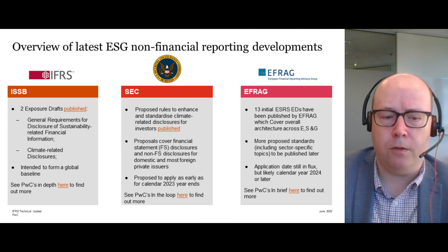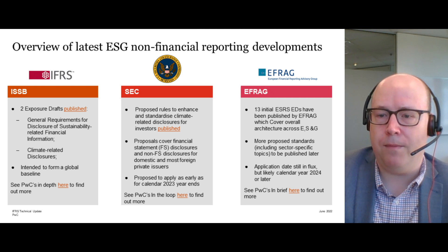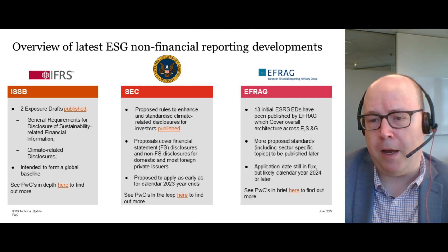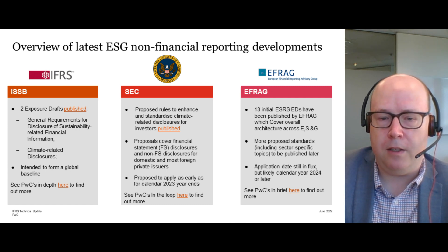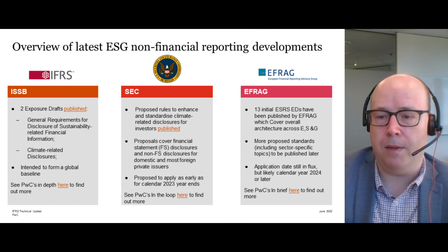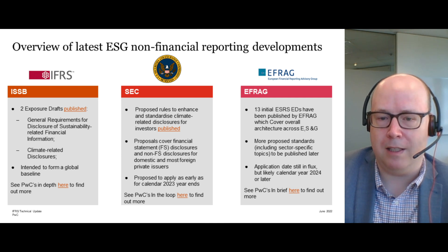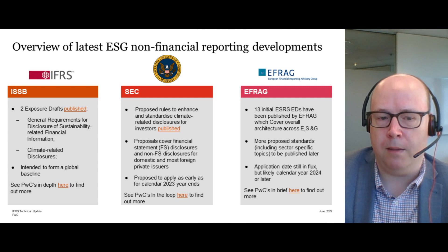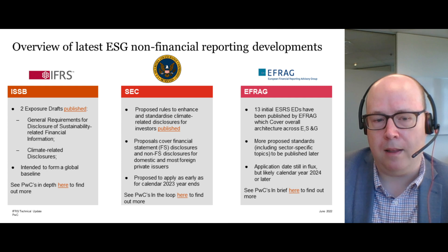EFRAG — the European Financial Reporting Advisory Group — is currently proposing 13 standards. The exposure drafts cover the general hierarchy and each of the environmental, social, and governance topics, as well as general concepts such as broader materiality going beyond enterprise value, and boundary — the scope of entities included in reporting. The industry sector classification is based on 40 sectors and 14 subsectors with further industry-specific disclosure requirements to be developed over time. This applies to all companies within the scope of the CSRD, or Corporate Sustainability Reporting Directive, with financial years starting on or after 1 January 2023, although based on ongoing trilog negotiations there appears to be broad support for at least a one-year postponement.